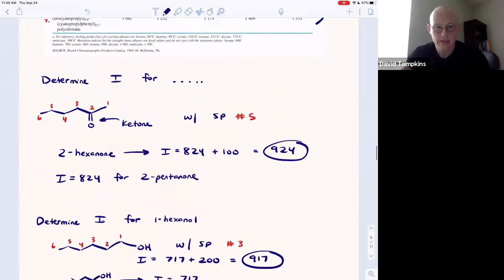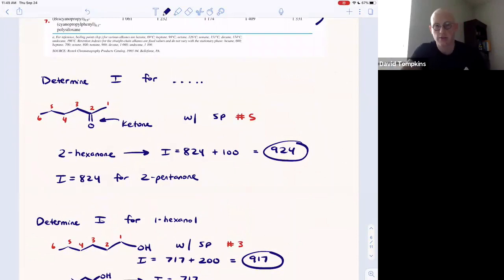For more practice with gas chromatography and Kovats retention index, you can visit unit two of my analytical course guide at chemguides.com.